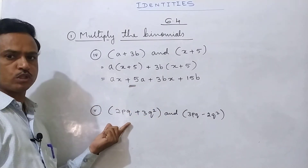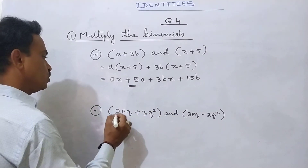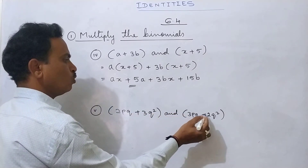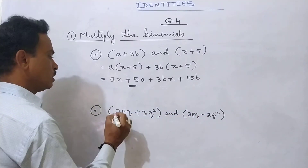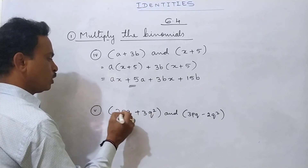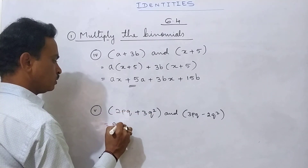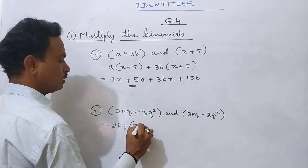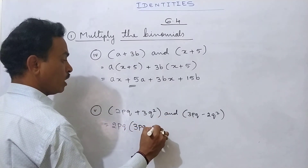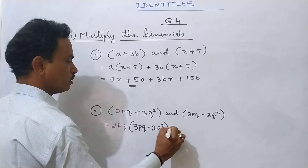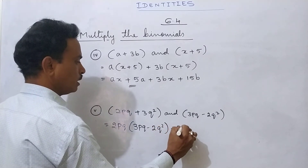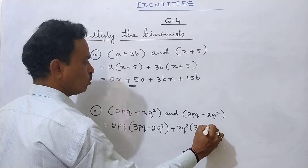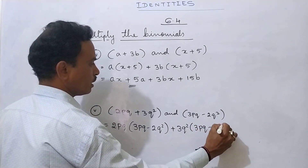Question 5: (2pq + 3q²) and (3pq - 2q²). First binomial first term 2pq into second binomial (3pq - 2q²), then plus 3q² into second binomial (3pq - 2q²).